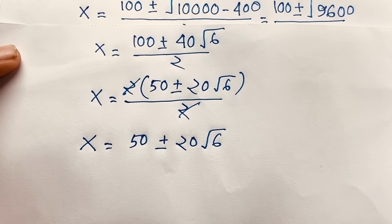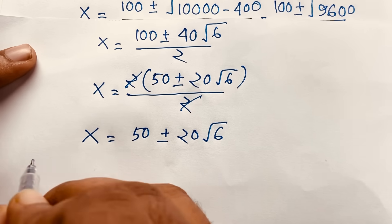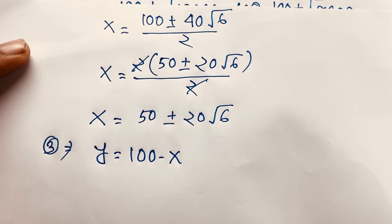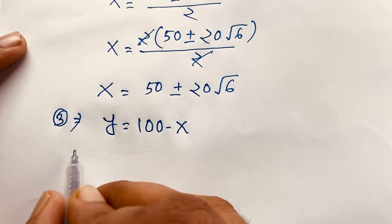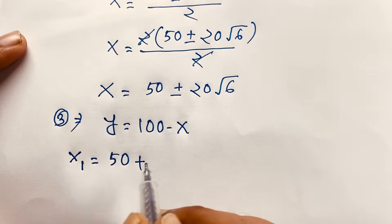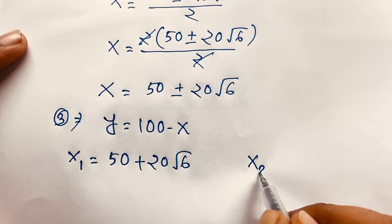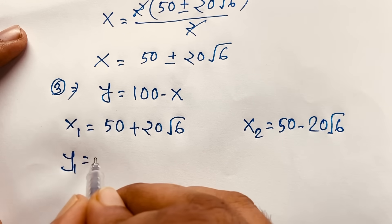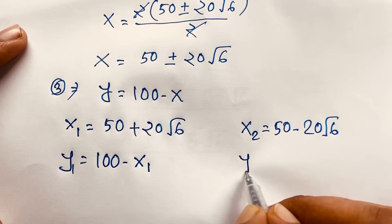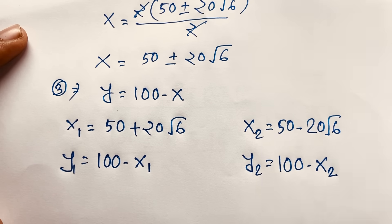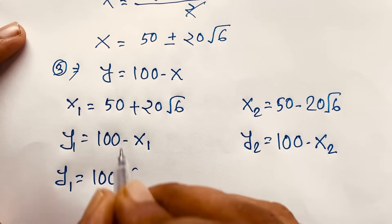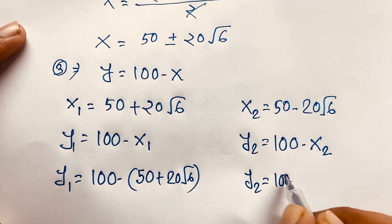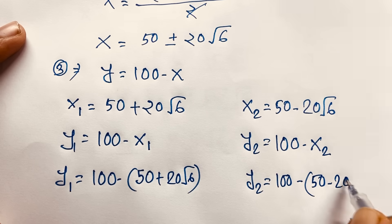This is the value of x in this math equation. But y is equal to what? Remember that our third equation is y equal to 100 minus x. So x₁ is equal to 50 plus 20 square root of 6, and x₂ is equal to 50 minus 20 square root of 6.